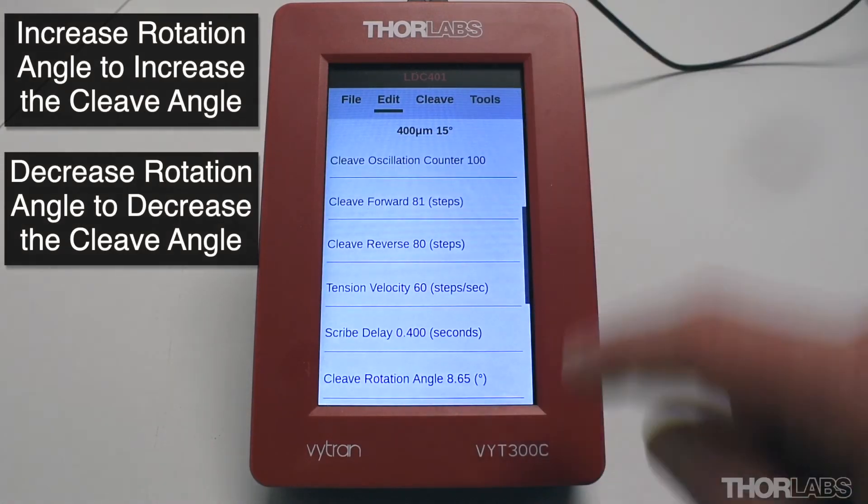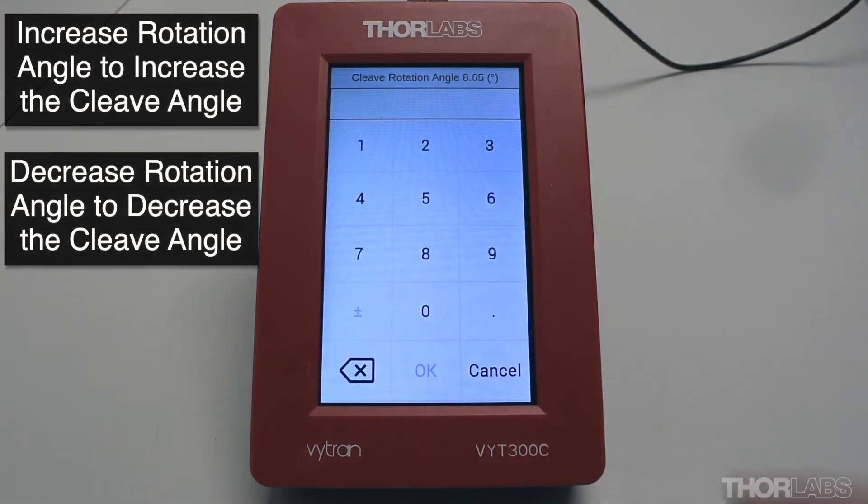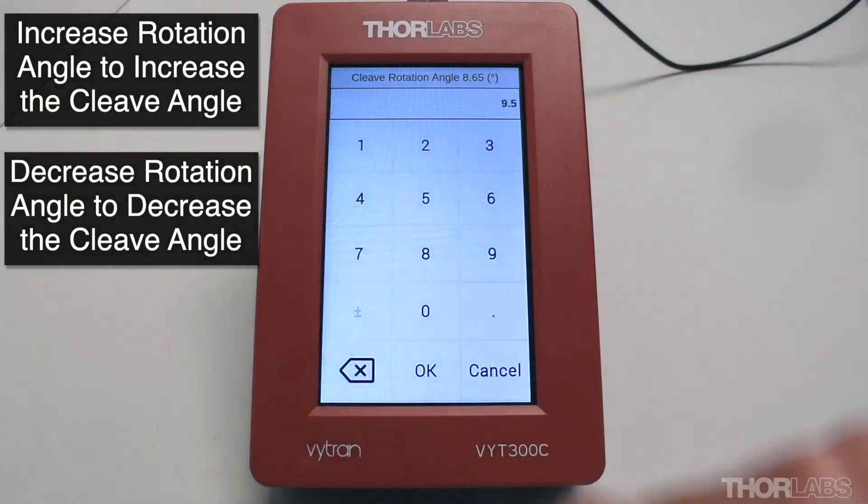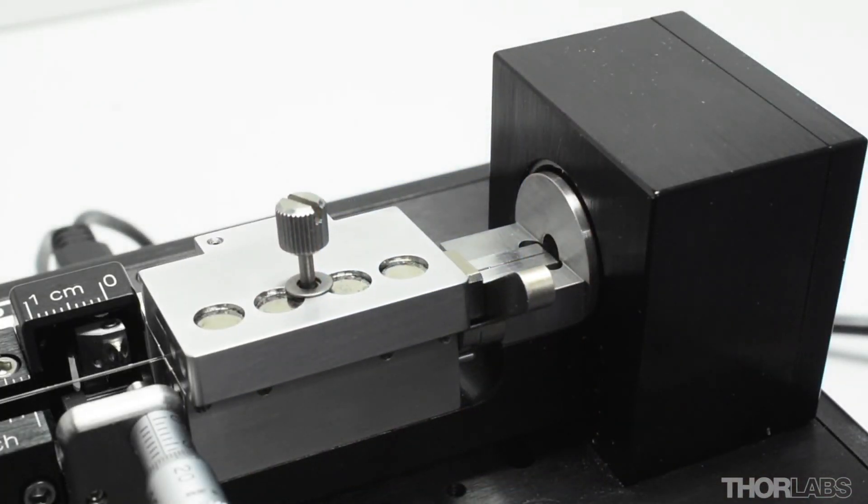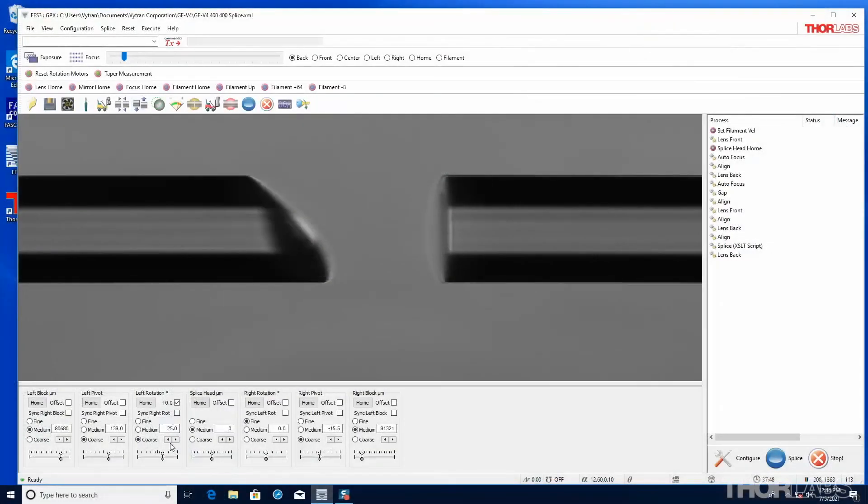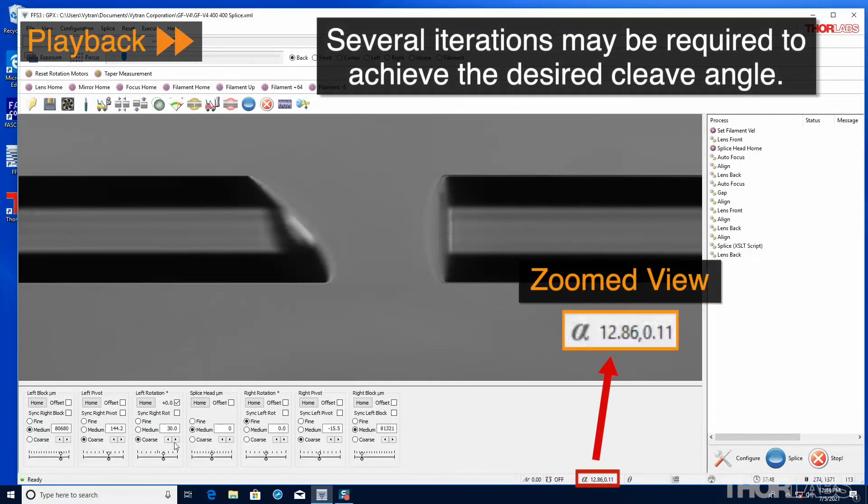Another fiber can be cleaved using the approach described earlier and the new cleave angle measured. Several iterations may be needed to determine the rotation angle that needs to be input into the controller to achieve the actual physical cleave angle desired, especially for large angle cleaves.